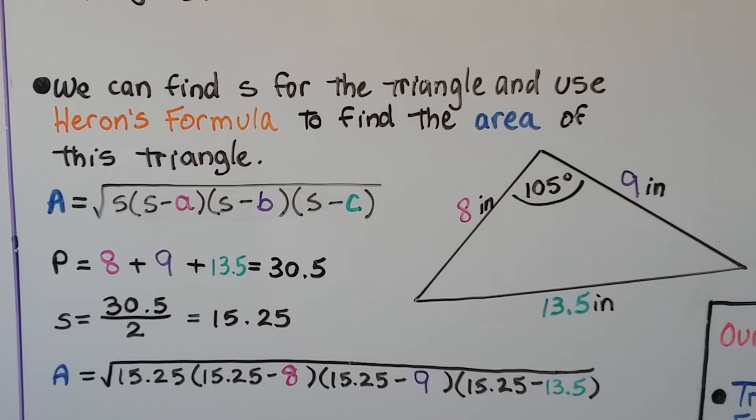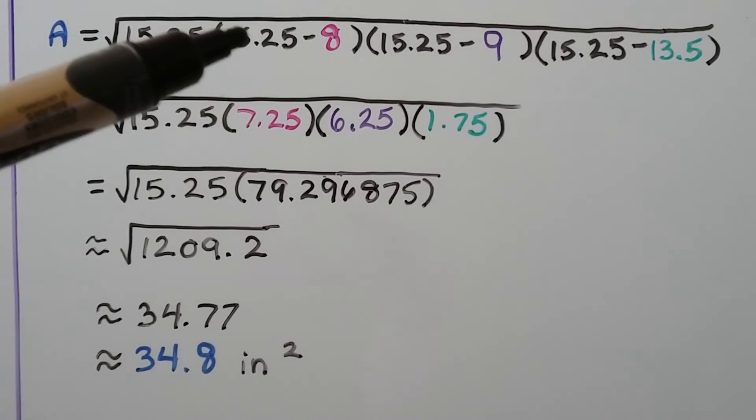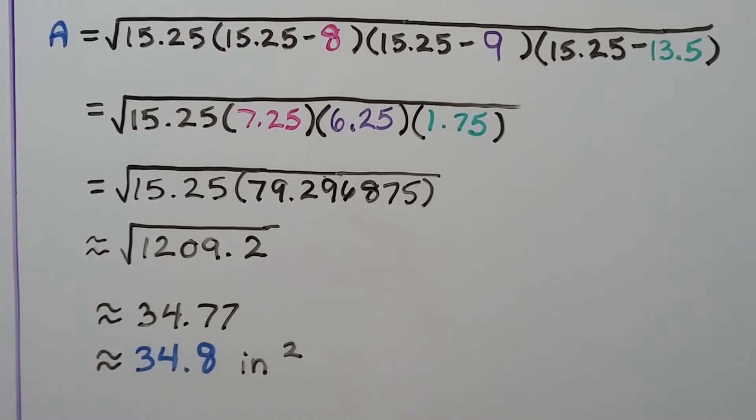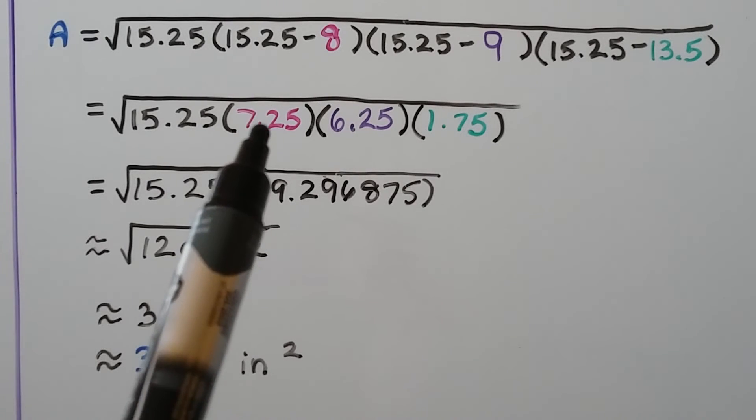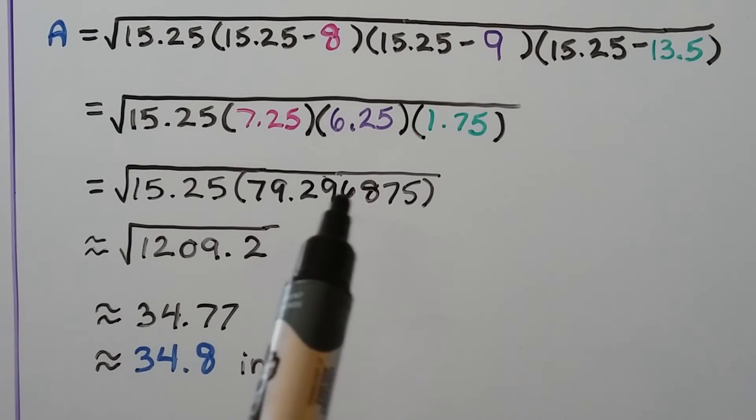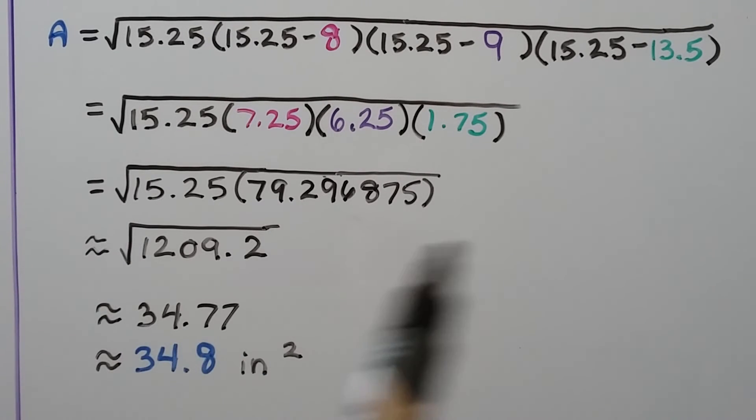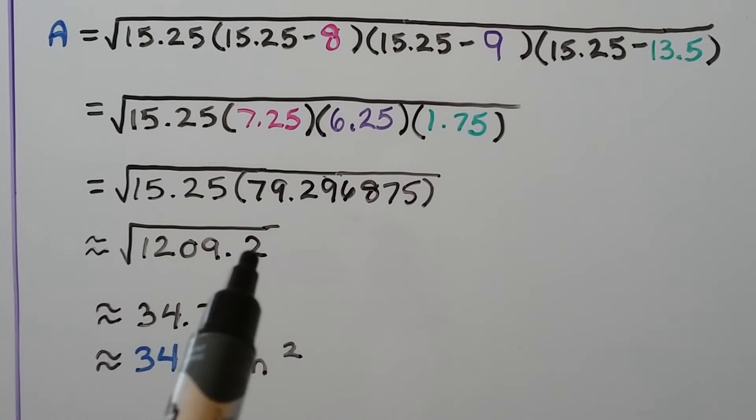We put it into the formula. That means we have 15.25 times (15.25 - 8) times (15.25 - 9) times (15.25 - 13.5). We do our subtraction first and 15.25 minus 8 is 7.25, minus 9 is 6.25, and minus 13.5 is 1.75. I multiplied 7.25 times 6.25 times 1.75 and I got this nice long decimal number. Then I multiplied it by 15.25 and I got 1209.2.